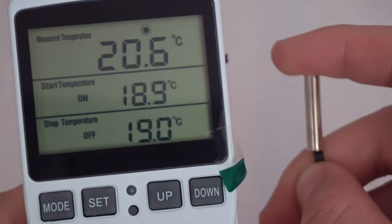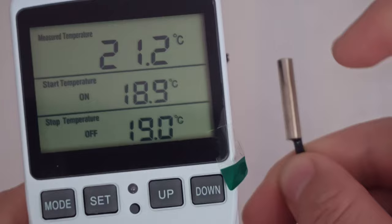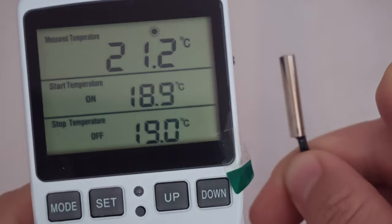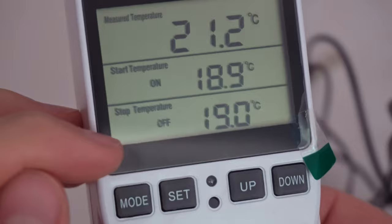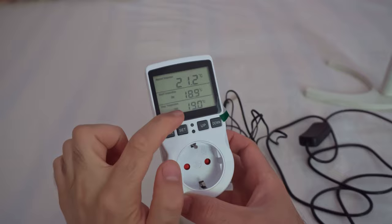As you can see it overshoots. It's still increasing. There's still some heat from my finger inside that sensor and then it drops slowly. That's the on temperature and that's the off temperature. When to give power to this socket and when to turn off power from this socket.